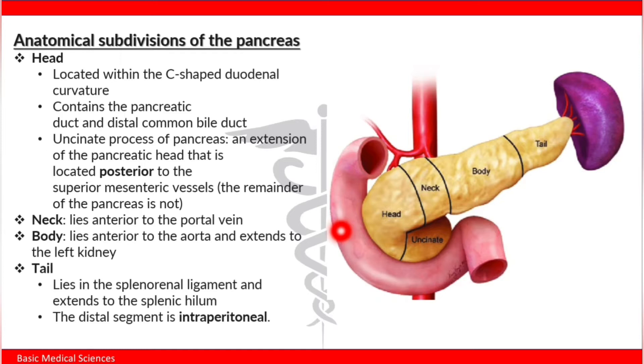The uncinate process is an extension of the pancreatic head that is located posterior to the superior mesenteric vessels. The remainder of the pancreas is not.